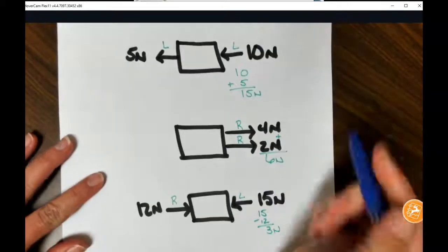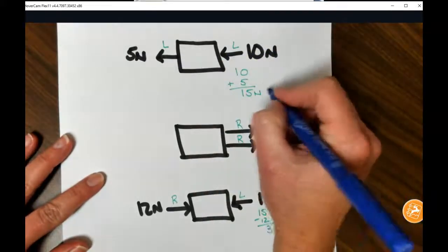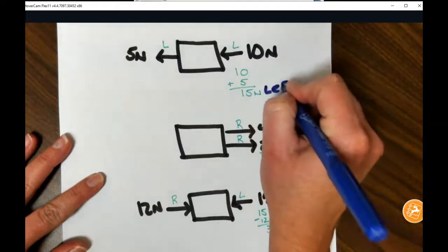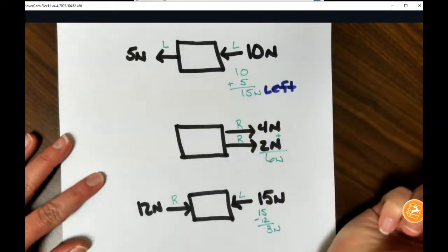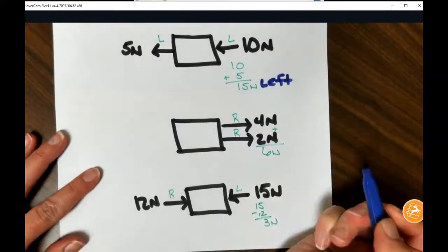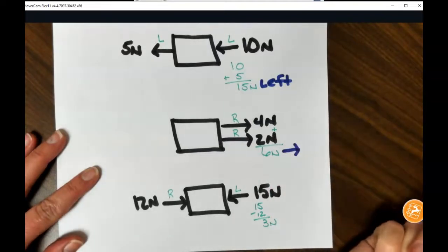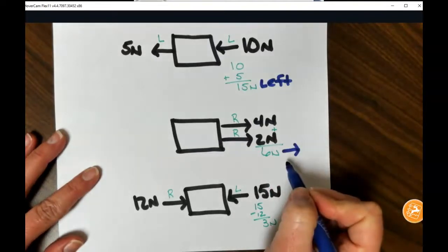The second one, we have two forces going in the same direction, so this object would accelerate to the left. In this scenario, both forces are going to the right, so the object would accelerate to the right. Now you notice I used a vector for that.